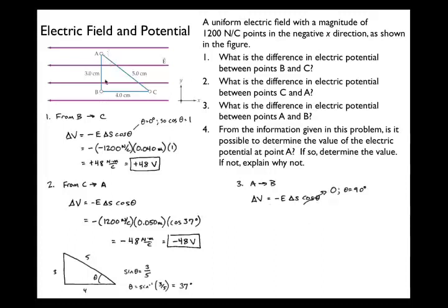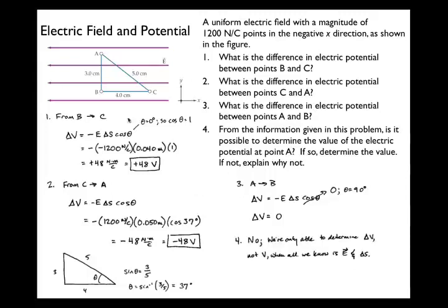From A to B: the displacement is vertical while the electric field is horizontal — the angle between them is 90°, cosine of 90° is zero, so there is no change in electric potential going from A to B. As for finding the actual value of electric potential at point A: the answer is no. What we've done only lets us find the change in potential between two points. Without knowing what objects create the electric field, we cannot determine the absolute value.